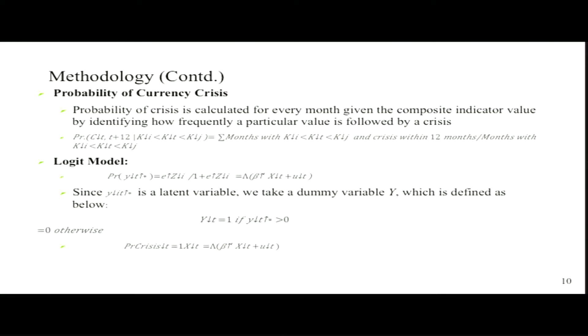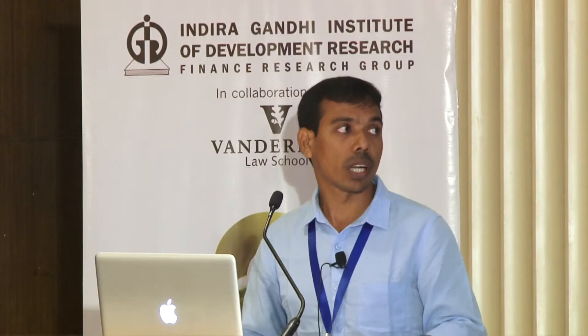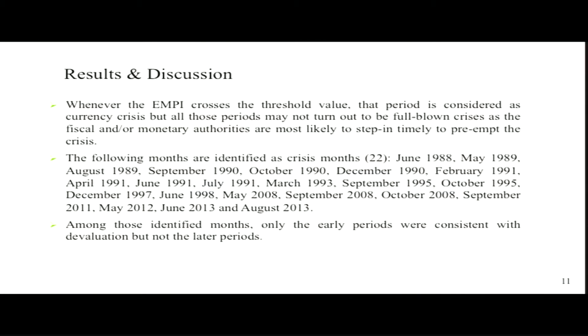We then move to the logit model, assigning one if there is a crisis, zero otherwise. Whenever the Exchange Market Pressure index crosses the threshold percentile, we consider it a crisis. However, not all identified periods turn out to be full-blown crises — some could be stress periods — where fiscal and monetary authorities may intervene to prevent escalation. In total, we identified 22 such periods, with only the early periods followed by an actual rupee devaluation.